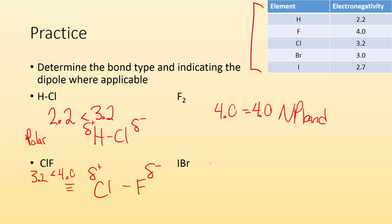And then IBr. I is 2.7 and Br is 3.0. They're not the same number. One of them is more electronegative than the other. They're going to hog those electrons, so we're going to get a polar bond. Not very polar because the difference is very slight, but they're not going to share those electrons evenly. So we're going to get a slightly negative on the bromine and a slightly positive on the iodine.